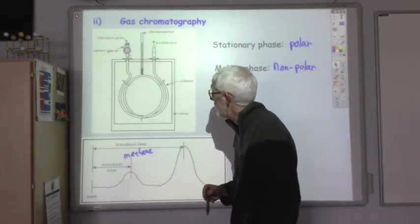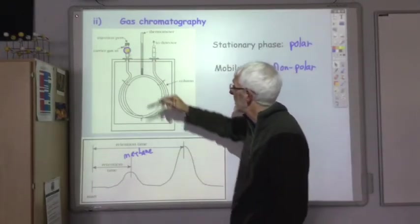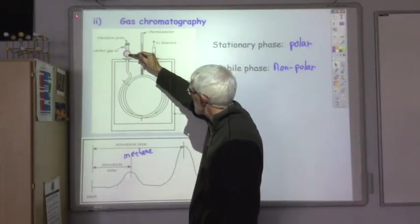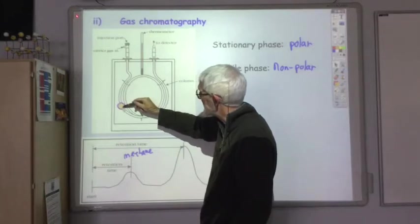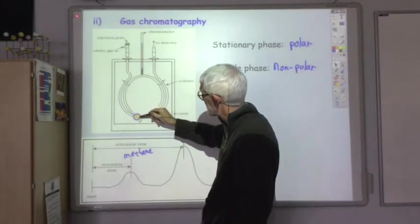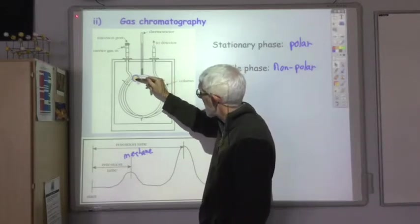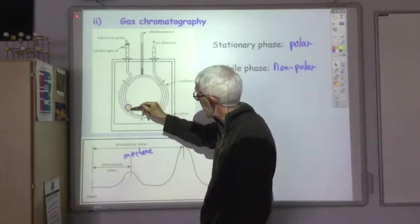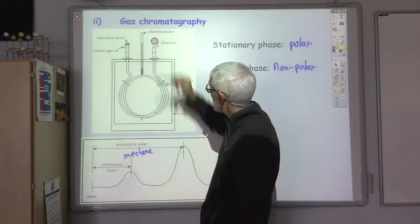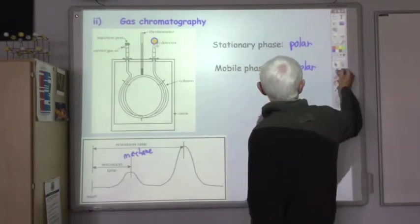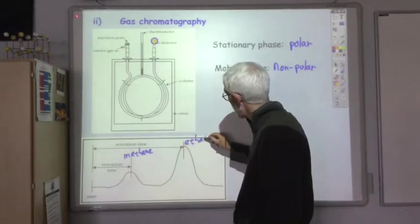The ethanol molecule—because the ethanol is polar because of the OH group, it will travel very slowly because it's more attracted to the stationary phase. So it will be quite a long time before we eventually see the ethanol appearing at this end. So it would have a far longer retention time. This would be our ethanol.